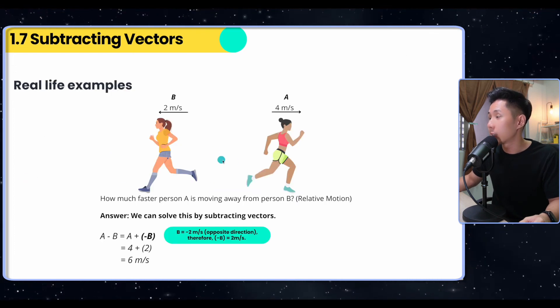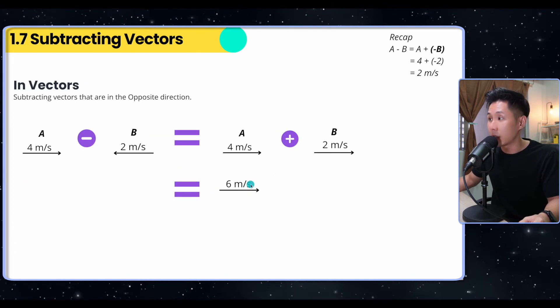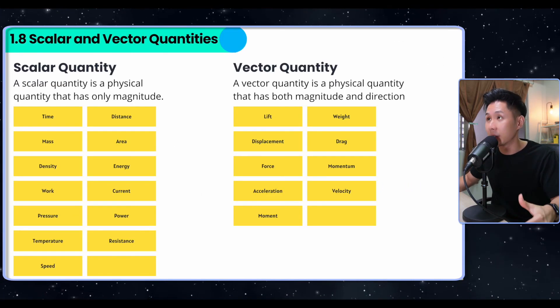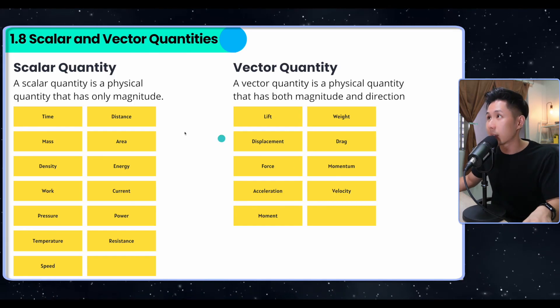This gives us the answer, which means that these two persons are moving away from each other at 6 meters per second. That's how subtracting vectors works. Just a little bit of context to help you understand.